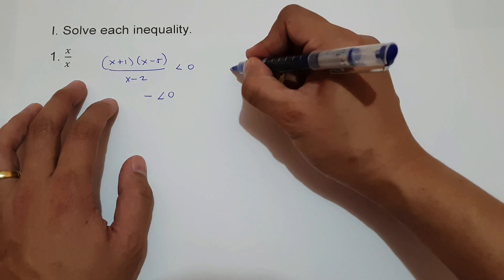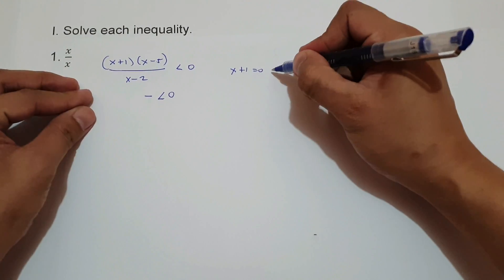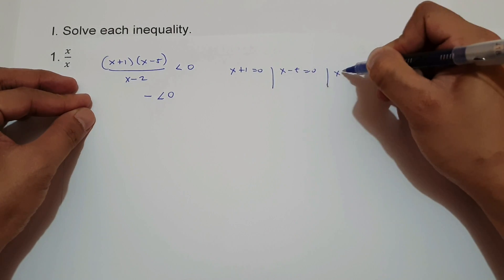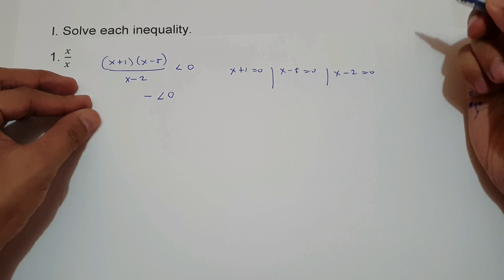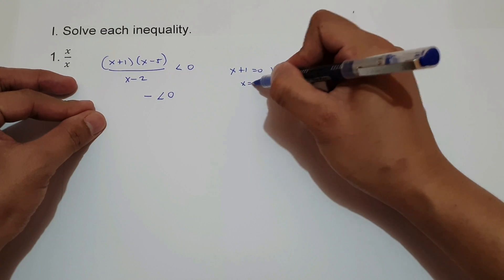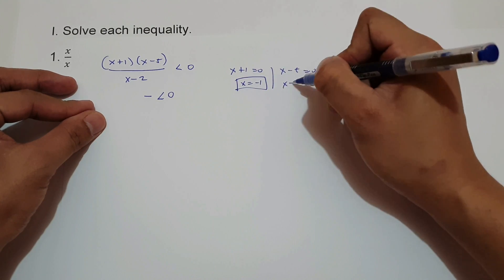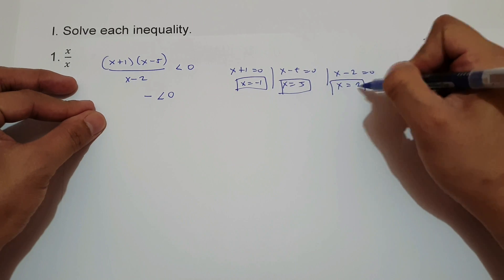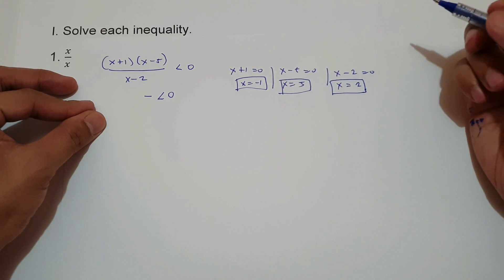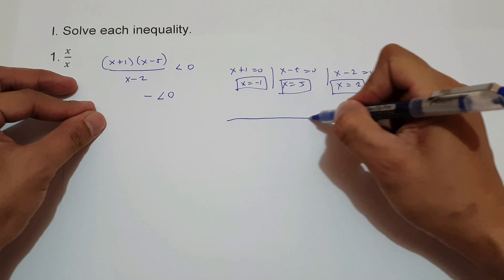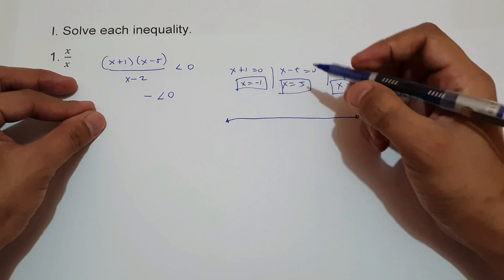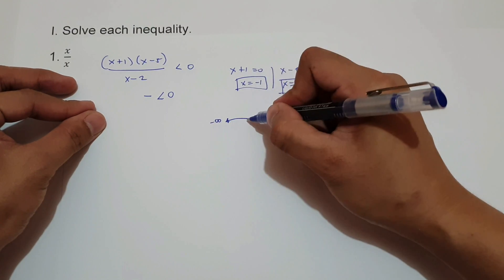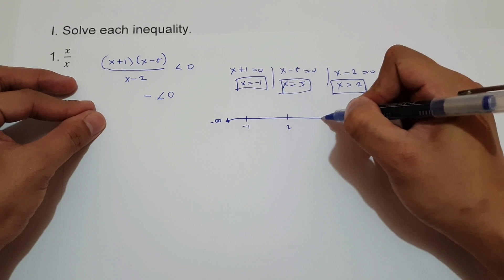The first thing we're going to do is equate each binomial in terms of 0. We have x plus 1 equals 0, x minus 5 equals 0, and x minus 2 equals 0. To simplify: x equals negative 1, x equals 5, and x equals 2. After that, we draw a number line and plot negative 1, 2, and 5.